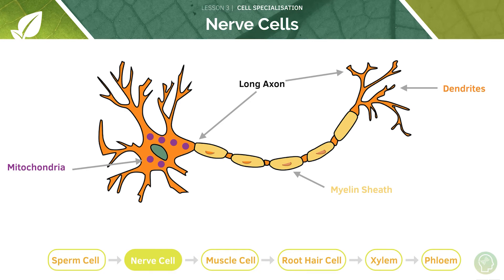Nerve cells have a long axon — that moves the impulse from one part of the body to the other, from A to B. They also have many dendrites, those long tail-end structures, that contact other nerves. This happens at special junctions called synapses using neurotransmitters.